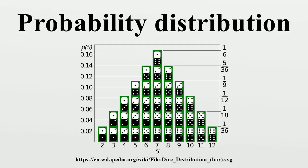Finally, the term 'probability distribution' is sometimes used the same as probability distribution function, but usually refers to the more complete assignment of probabilities to all measurable subsets of outcomes, not just to specific outcomes or ranges of outcomes.